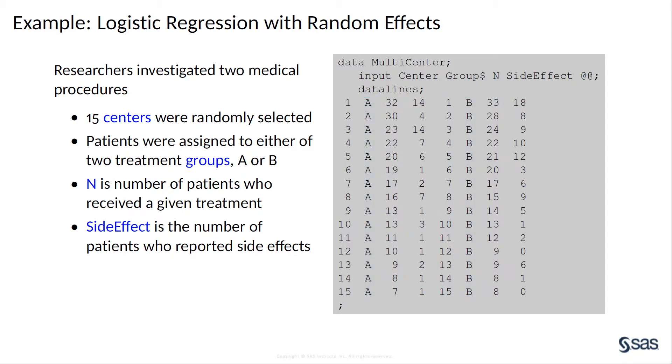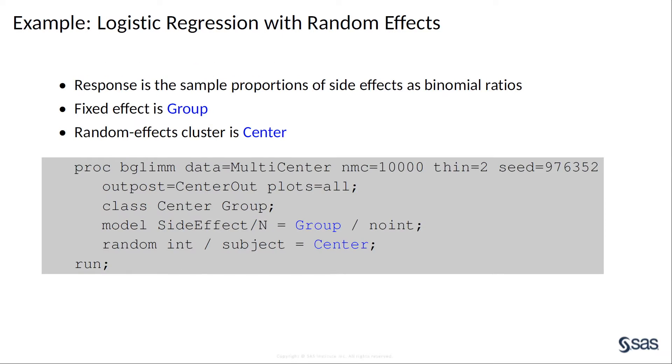The variable N is the number of patients who received a particular treatment. The variable side effect is the number of patients who reported side effects. The response is the sample proportions of side effects. You can model the response as binomial ratios and account for the fixed group effect and the random selection of centers.